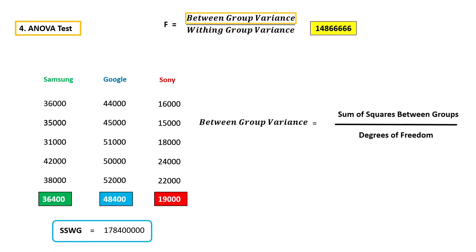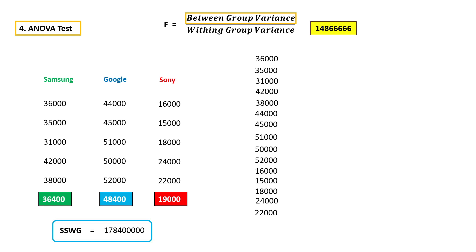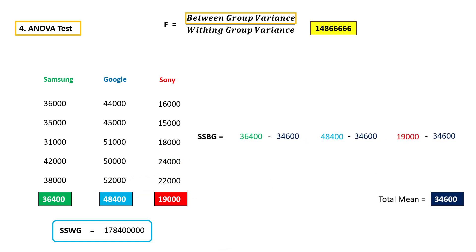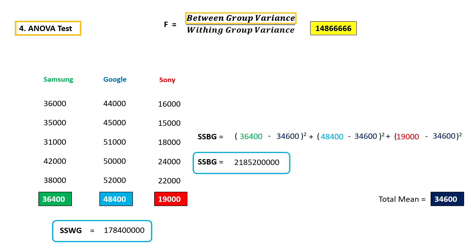Now let's calculate between group variance. To calculate between group variance, we have to divide sum of squares between groups by its degrees of freedom. To calculate sum of squares between groups, take all the values and consider them as one group, then take the mean value. After that, take each and every group mean and subtract it from the total mean, square the difference, and add them together. Then we have to multiply it by 5 — the total number of samples within each group — because we are doing this calculation for each and every sample. So if you multiply by 5, you will get sum of squares between groups.